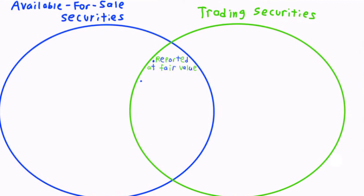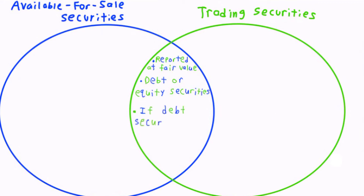Both investment types can be either debt or equity securities. If the security is a debt security, the company must not plan to hold it until maturity, of course because we have a separate classification for held-to-maturity securities, which was discussed in the previous video.